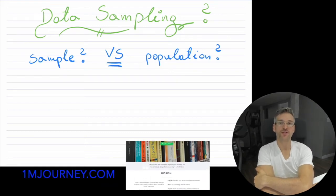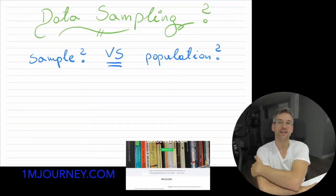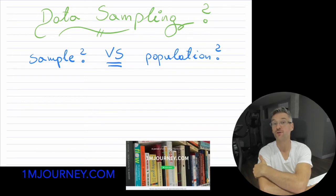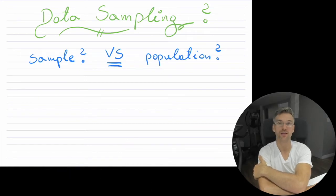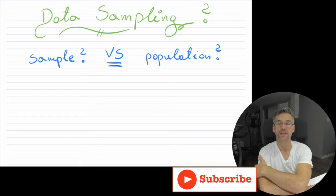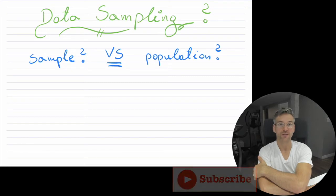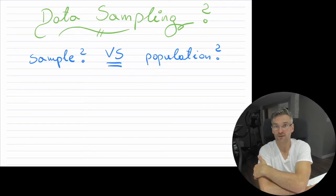Welcome to another video. This one is related to relations — it's the third video in the series on relations, and this one is on data sampling. So how do we sample data, or how do we collect data if we want to create some kind of a survey, create some graphs, or take out some data from a particular population?